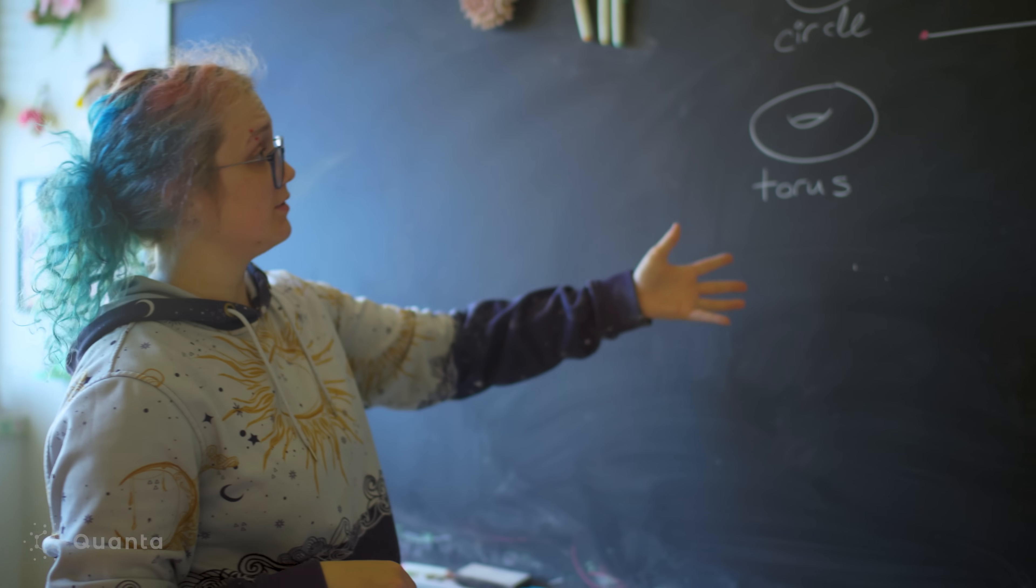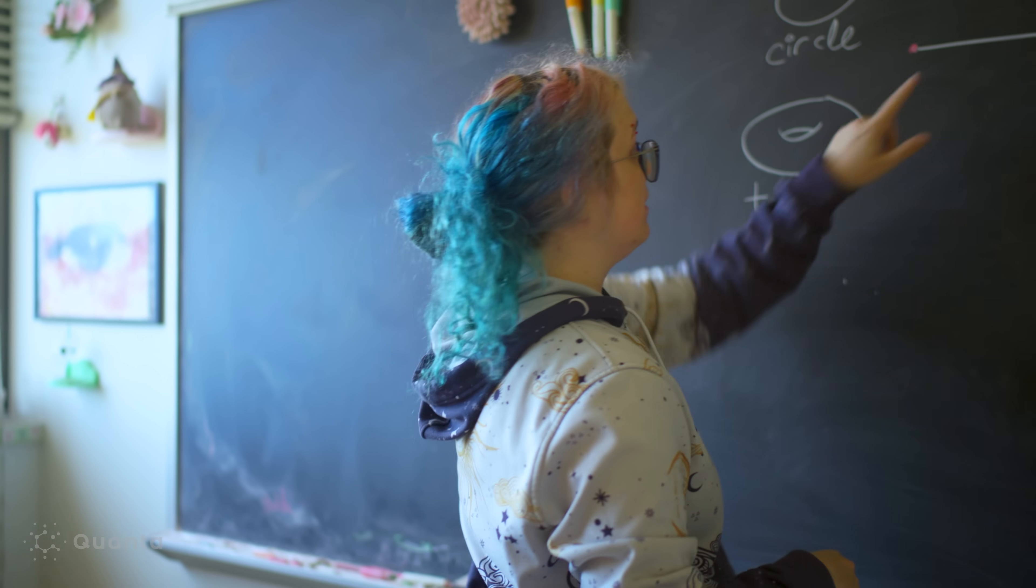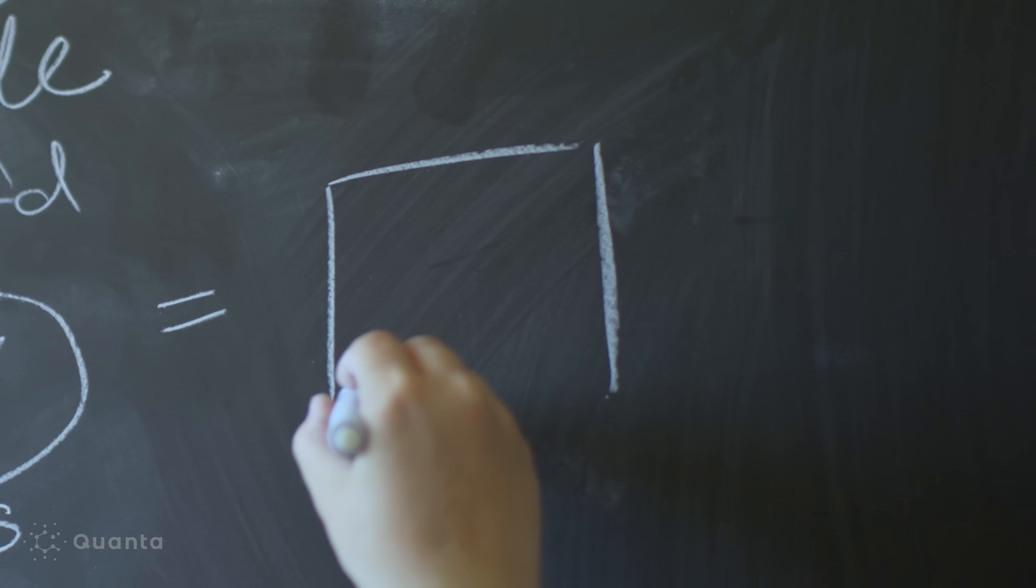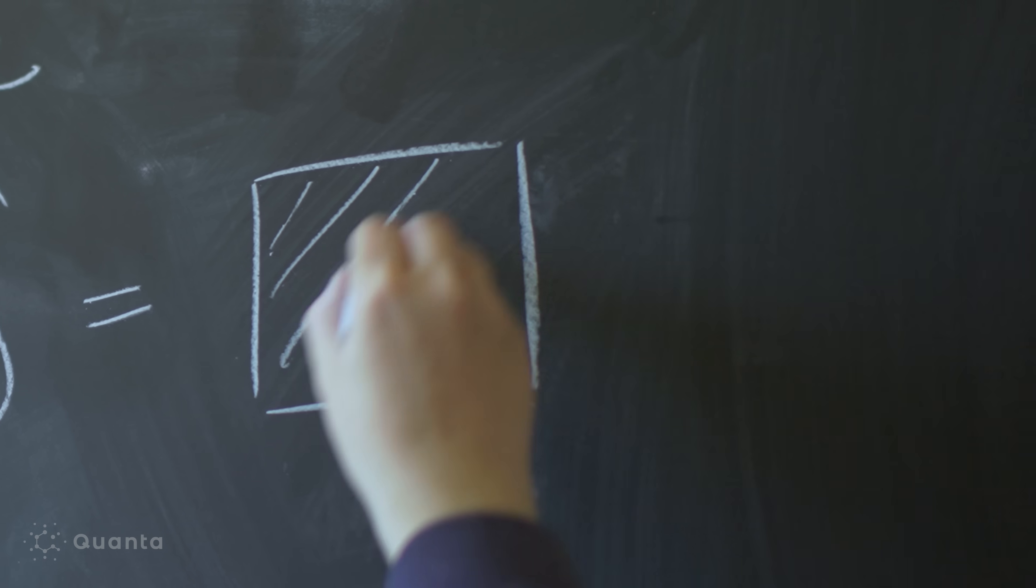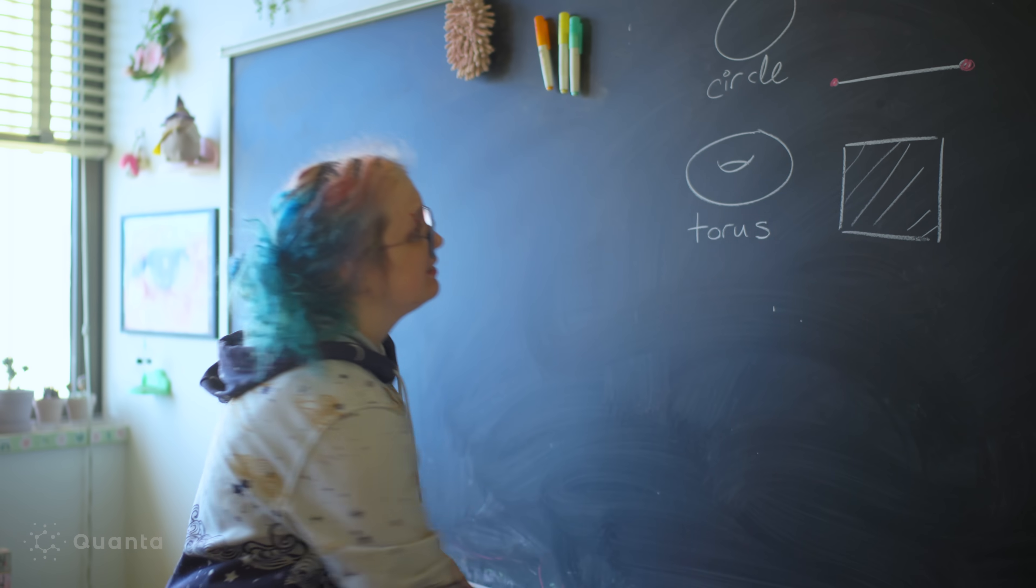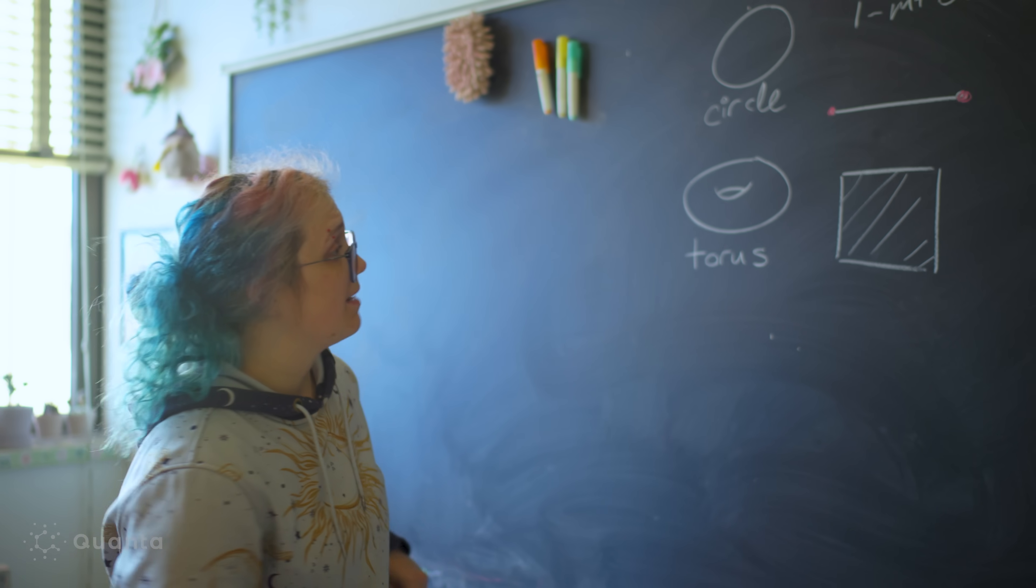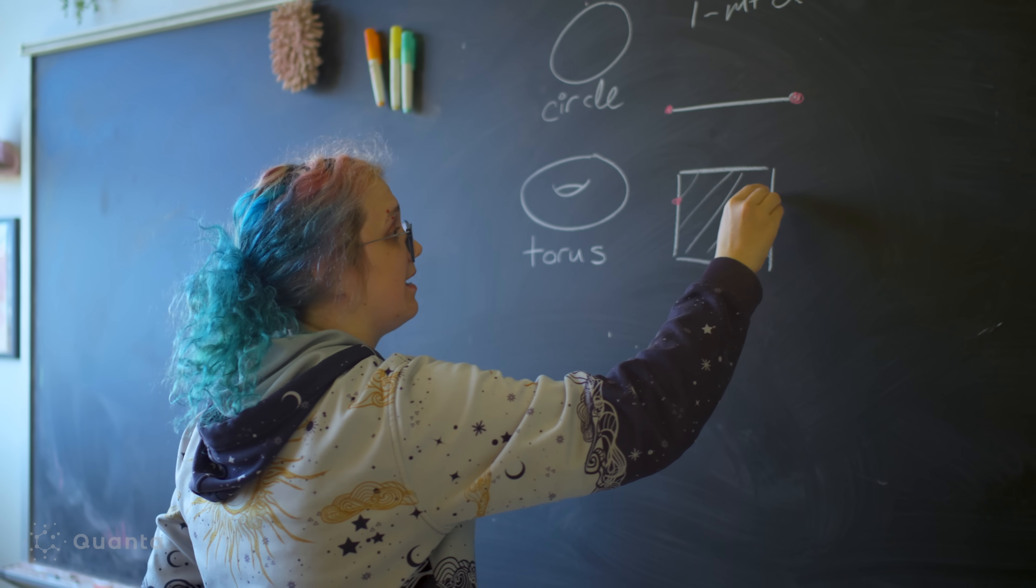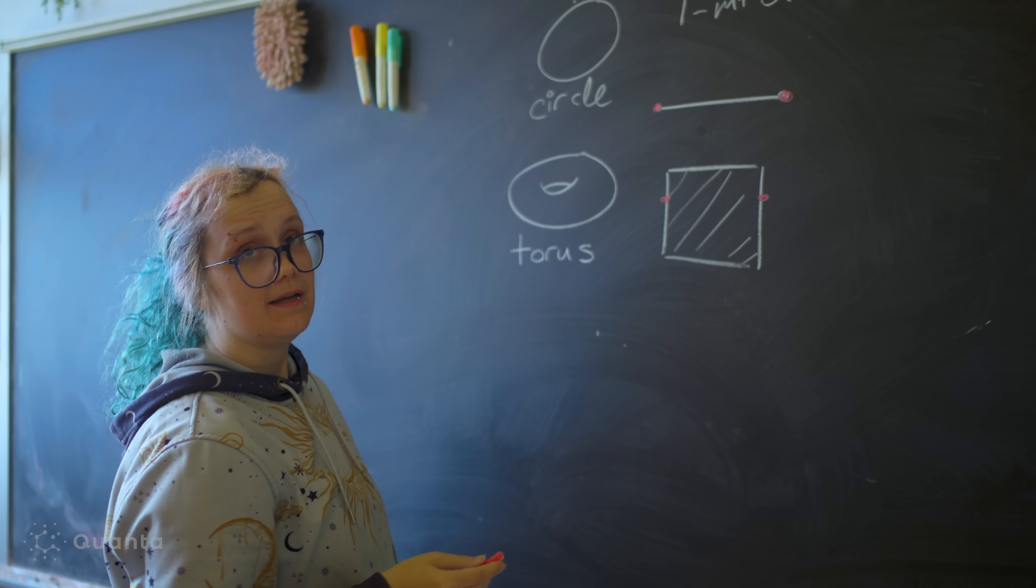And one way that I could construct the torus is I'm going to start out with the analog of a line segment in dimension two, that would be something like a square. It seems different from a torus, but what I could do is exactly the same idea here. I'm going to declare if I go off the left edge, then I'm going to come back on the right edge, and vice versa.